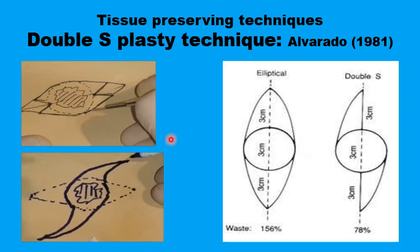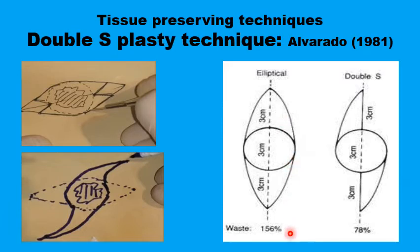Another tissue-preserving technique in addition to M-plasty and S-plasty is the double S-plasty technique. In the traditional fusiform wound, the two triangular pieces of normal tissue at the ends actually have a surface area of more than 150% of the circular central part. This waste can be halved by running an imaginary line bisecting the wound from one apex to the other, taking only half on one side and half on the opposite side, preserving more tissues on both sides.